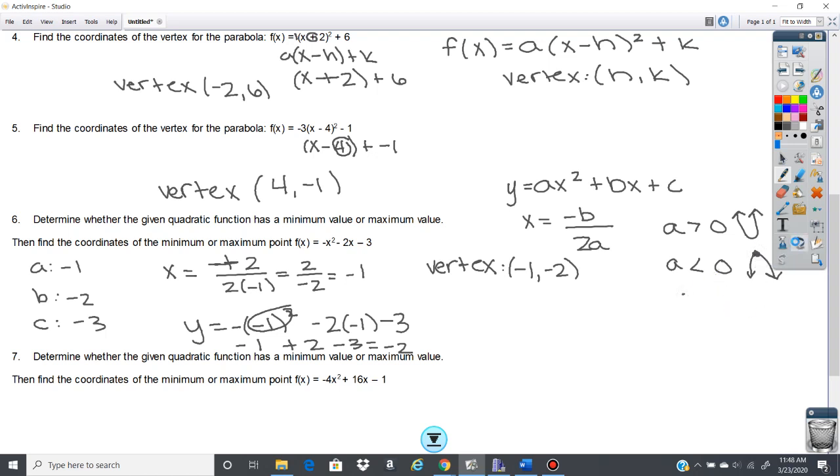this point of the vertex, that is going to be a max point. So this is going to have a maximum. If a is greater than 0, then it would have a minimum.